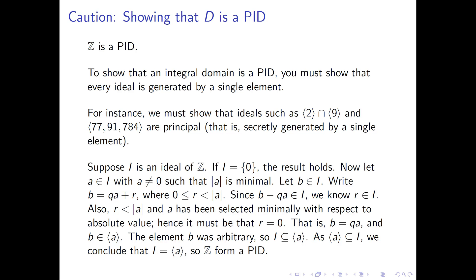To show that, pick b to be another arbitrary element of the ideal, and show that it's a multiple of a. I'll use the quotient remainder theorem: write b as q times a plus a remainder r. The important thing to note is that we have bounds on the remainder. By the division algorithm, which holds in the integers, the remainder r is non-negative and strictly smaller than the absolute value of a.